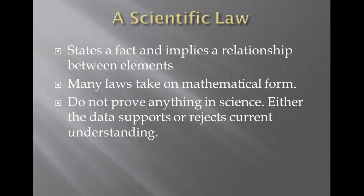Now a scientific law simply states a fact and implies a relationship between elements. Many laws take on mathematical form. And again, we do not prove anything in science. Either the data supports or rejects current understanding. There was a law proposed in 1829 by Dobereiner, the law of triads, where at the time they had elements with similar characteristics. If you took three elements with similar characteristics and took the heavy element and the light element, added up their weights and divided by two, you'd get the weight of the middle element. Well, this worked well until we discovered more elements, and at that point we had to toss out this law of triads because this relationship did not work any longer.